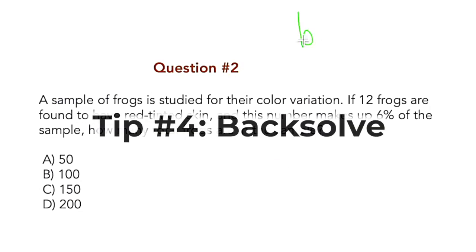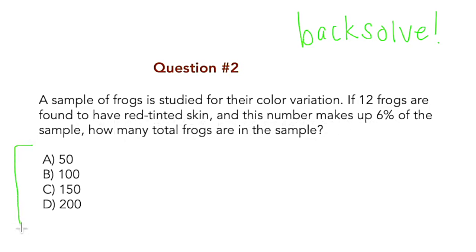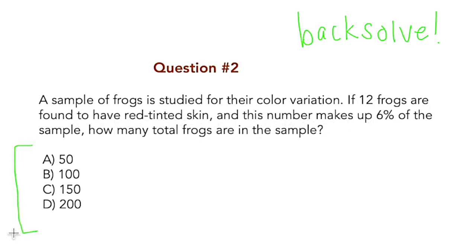Tip number 4 is back solve. So what does that mean? All that means is we are going to use our answer choice to help us out here. So let's read this question. A sample of frogs is studied for their color variation if 12 frogs are found to have red tinted skin, and this number makes up 6% of the sample, how many total frogs are in the sample.